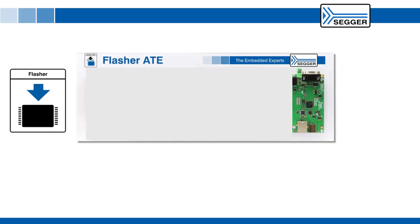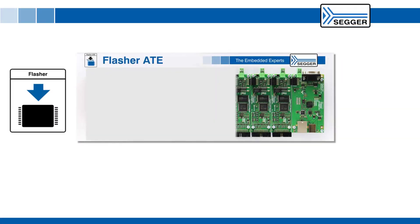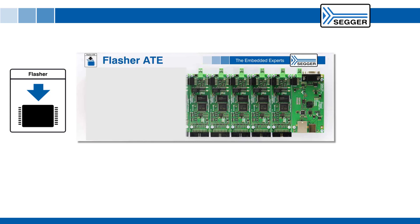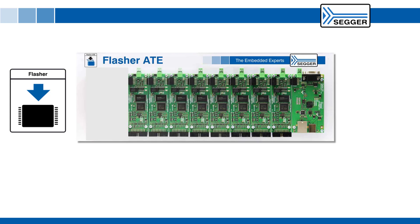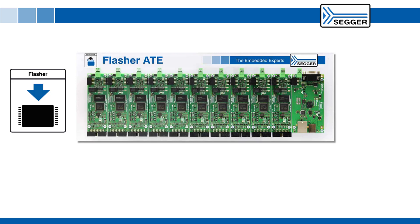The SEGGER Flasher ATE Gang Programmer is a modular in-circuit programmer for high-volume mass production that allows you to program up to 10 embedded target boards in parallel.